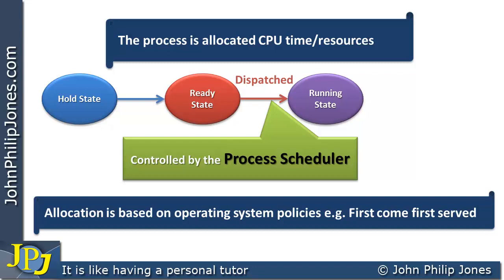One of the processes, as represented by these process control blocks, will actually be selected and executed. We say this is being dispatched to the running state, and this dispatching is controlled by something called the process scheduler. When a process is dispatched to the running state, it is allocated CPU time — the resource of the central processing unit. This allocation is based on operating system policies, such as first come, first served.